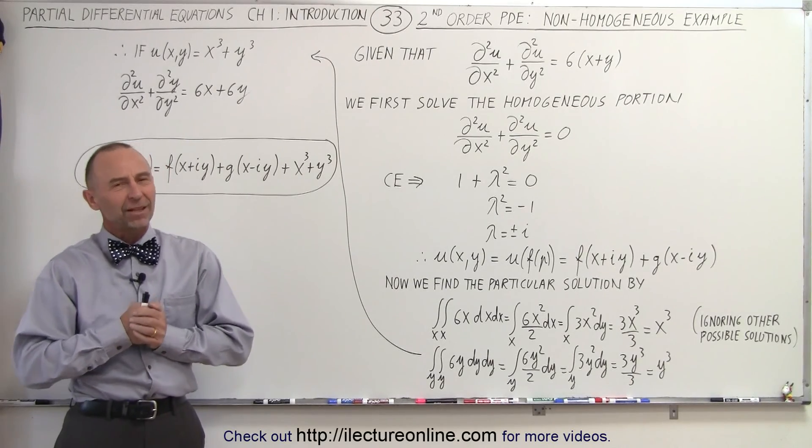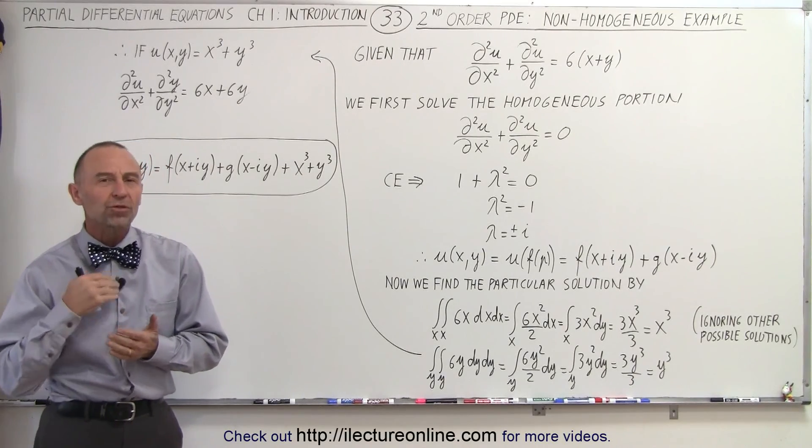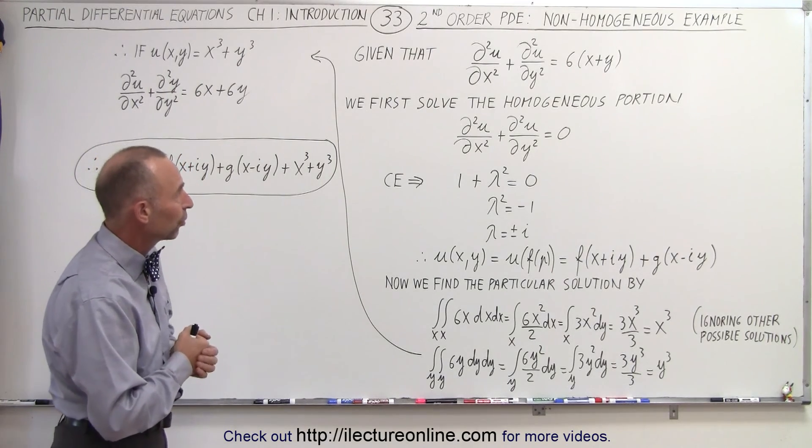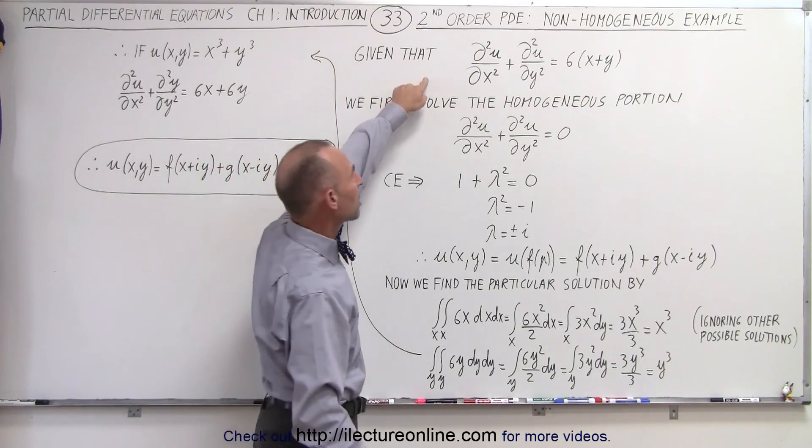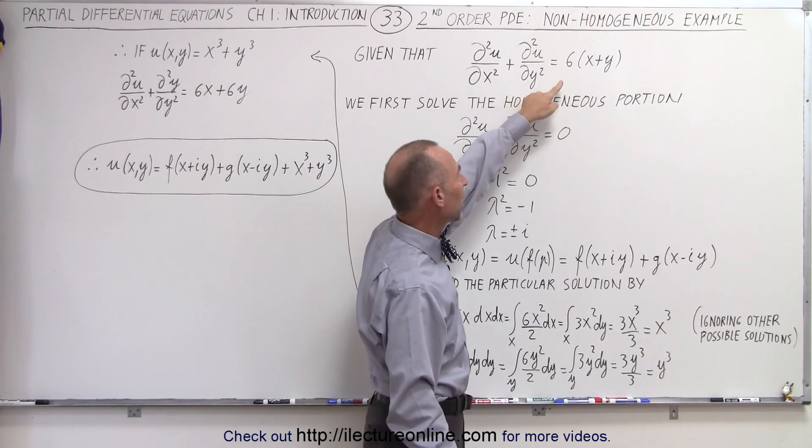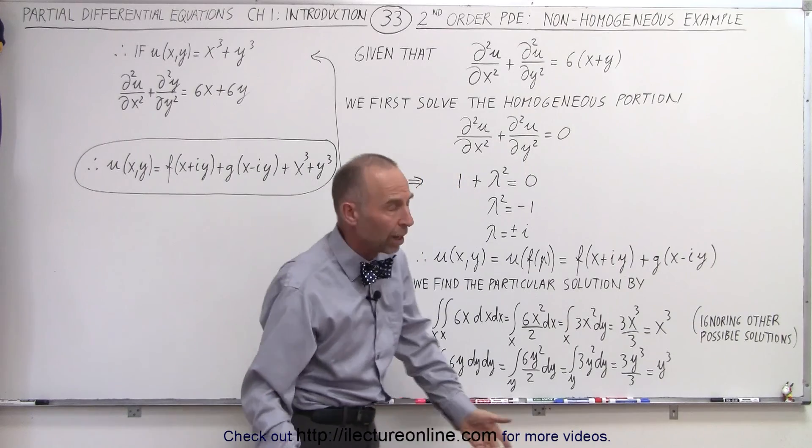Welcome to our lecture online. Now let's take a look at a non-homogeneous second-order partial differential equation. So let's say we're given this equation right here. Notice the first part on the left looks familiar, but on the right side we have a 6 times x plus y.